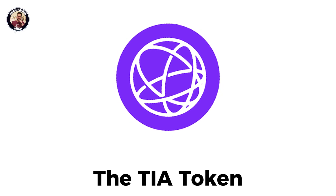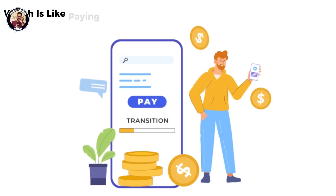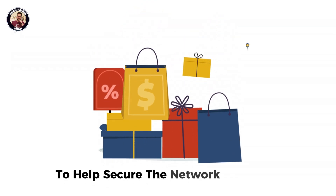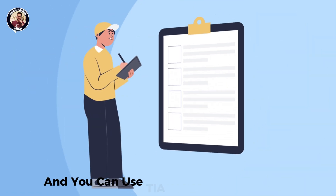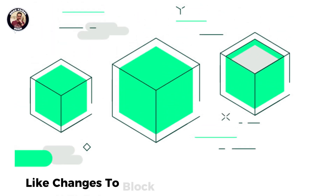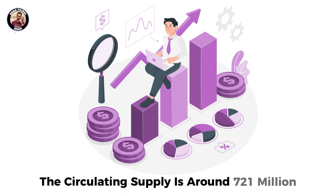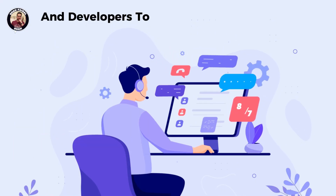Let's break down the TIA token, Celestia's native cryptocurrency. You use it to pay for blob space, which is like paying rent to store your data on the Celestia network. It is also used for staking, to help secure the network and earn rewards — usually around 5-7% per year. And you can use TIA to vote on proposals, like changes to block size or network upgrades. As of July 2025, the total supply is 1.14 billion TIA, the circulating supply is around 721 million, and about 60 million tokens were airdropped to early users and developers to kickstart the ecosystem.